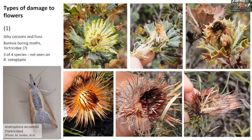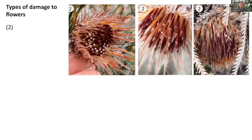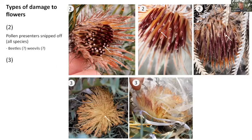The second type of damage: the pollen presenters were snipped off or chewed off, and this was common on all of the species I looked at. Third, characteristic of Banksia cataglypta: the styles in the center of the inflorescences were nipped off by something with powerful jaws, because these flowers are really tough — they almost feel like they are made of plastic. They even managed to chew through the organza bags I was using in my pollination experiments.